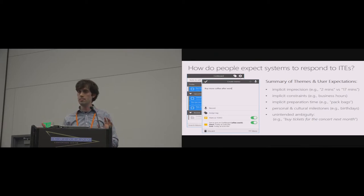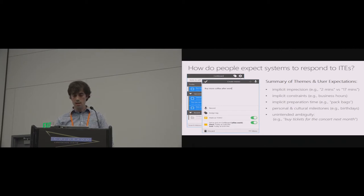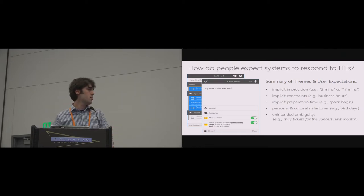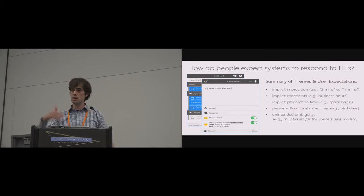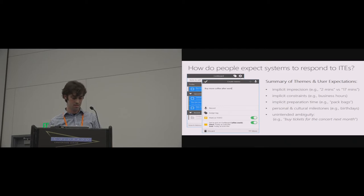Almost all participants tried to make reference to personal or cultural milestones — birthdays, holidays, calendar events, even children's sporting events. And very often there was some ambiguity that wasn't intentional. One participant needed a reminder to buy tickets for a concert next month — our agent said it would remind them next month, but the concert was next month; they needed to buy tickets much earlier. Similarly, someone needed to follow up for dinner plans on Saturday or Sunday — it was the dinner that was Saturday or Sunday, not the follow-up.